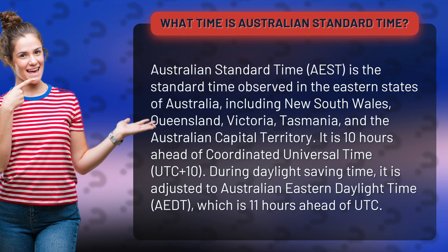It is 10 hours ahead of Coordinated Universal Time, UTC plus 10. During daylight saving time, it is adjusted to Australian Eastern Daylight Time, AEDT, which is 11 hours ahead of UTC.